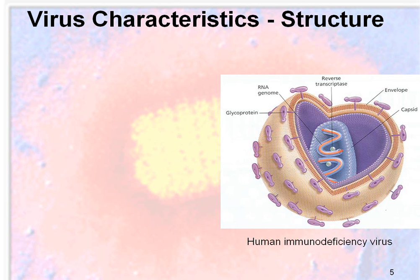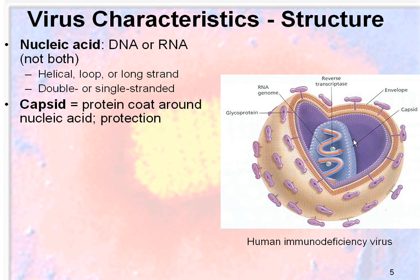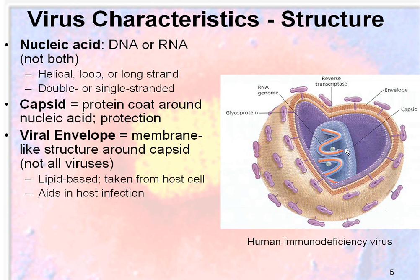Let's look carefully at some of the structure of viruses. Here is a diagram of HIV, otherwise known as human immunodeficiency virus. Viruses either have DNA or RNA as their nucleic acid. This can be helical in shape, a loop, or a long strand, and it can be double or single stranded. They sometimes have a capsid surrounding the nucleic acid, and this is a protein coat that serves as protection. They also have a viral envelope, as shown here, which is a membrane-like structure around the capsid. Not all viruses have this, but some do.